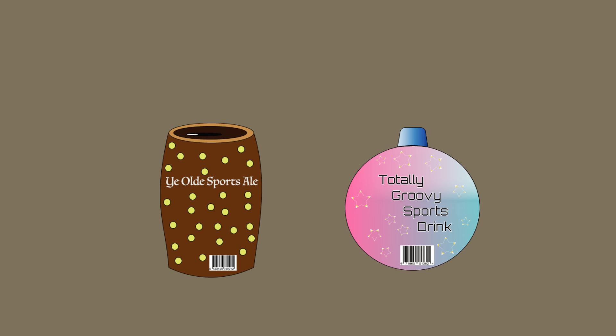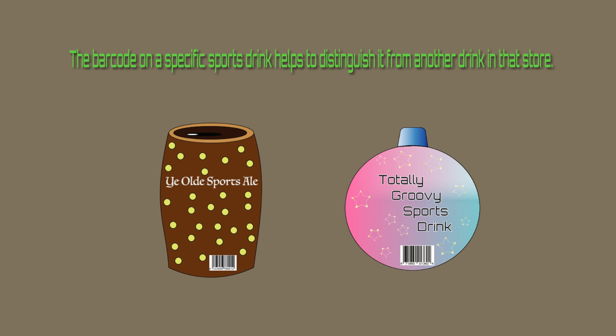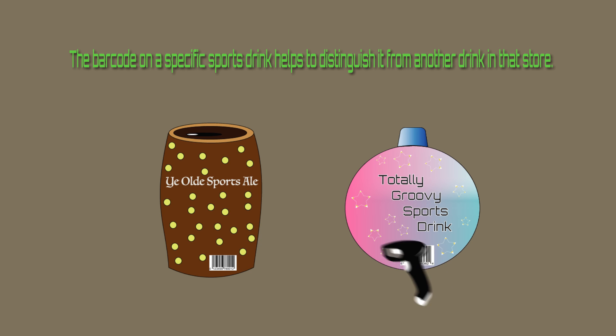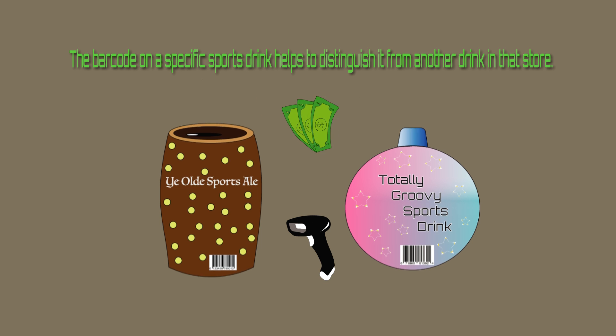You might be shocked to discover that the barcodes on certain food products in your local grocery store and the scientific barcoding method are not that different from one another. For example, the barcode on a specific sports drink helps to distinguish it from another drink in that store. These two drinks have different barcodes so that a cashier scanner can identify which drink it is and how much it costs.